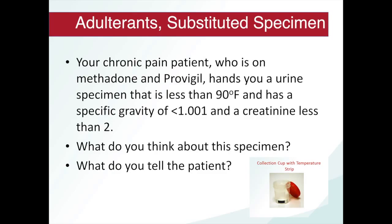Another case: a chronic pain patient on methadone and Provigil hands you a urine specimen that is less than 90 degrees Fahrenheit, has a specific gravity of less than 1.001, and a creatinine of less than 2. This does not appear to be normal urine — specific gravity is close to that of water and creatinine is less than 2. Unless your patient is hypothermic, the temperature should be above 90°F by the time they hand you the specimen. You tell the patient this specimen is not valid and another one will need to be collected.